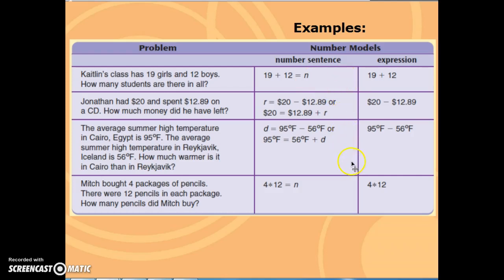There are some other examples here, too, that you can come back to. You can see in each of these, there is a variable, and an operation, and a relationship symbol.